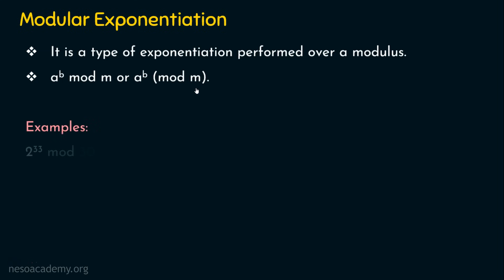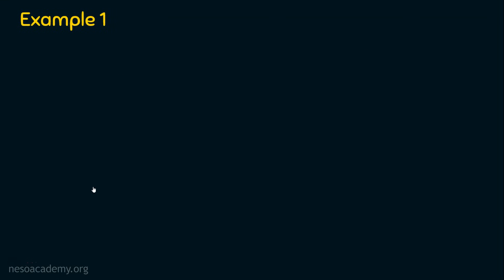Let's see some examples. Example number 1 is 2 power 33 mod 30, and another example is 3 power 100 mod 29. Let's first start with example number 1: solve 23 power 3 mod 30. We are going to solve the examples from the base level — starting with some simple examples, then progressing to more complex ones. I am starting with 23 power 3 mod 30.